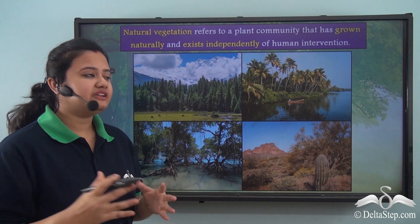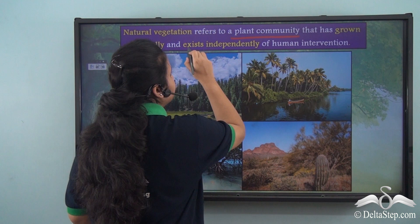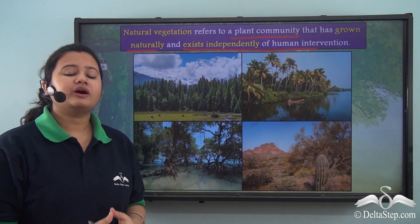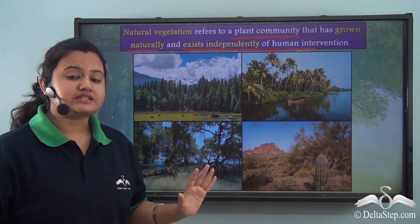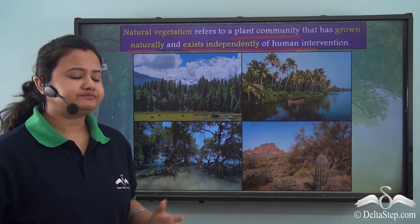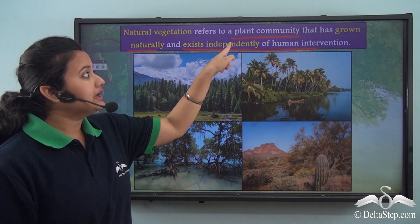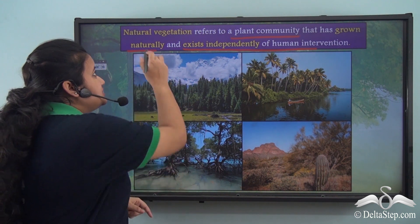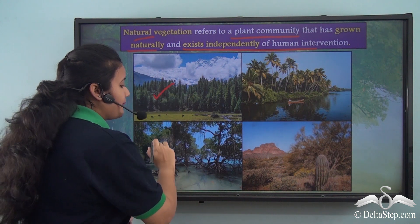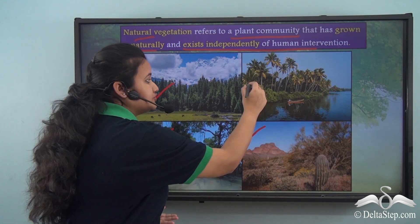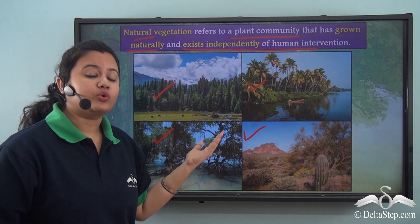Natural vegetation of any region refers to a plant community that has grown naturally and exists independently of human intervention. That is, any forest, grasslands, shrubs etc. that have grown naturally without human aid and have been left undisturbed by human beings for a long time. We often grow plants on rooftops or in gardens, or cultivate crops - they are also part of a plant community but do not form natural vegetation because they grow with human aid. Whereas forests, mangroves, scrubs and thorns found in different parts of the country form the natural vegetation of India because these trees have grown up naturally.